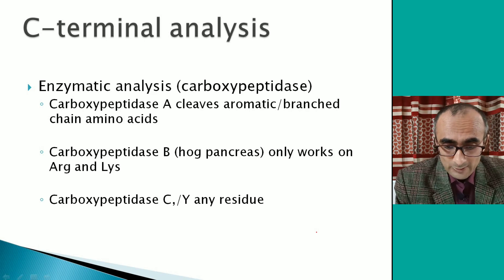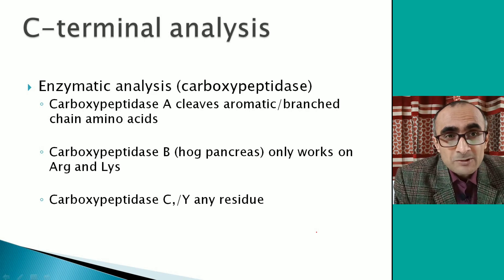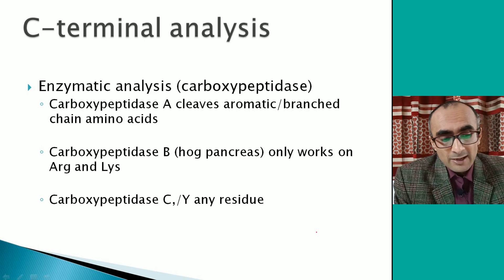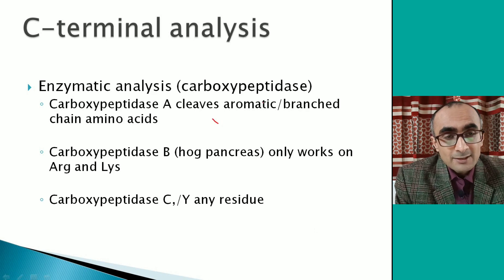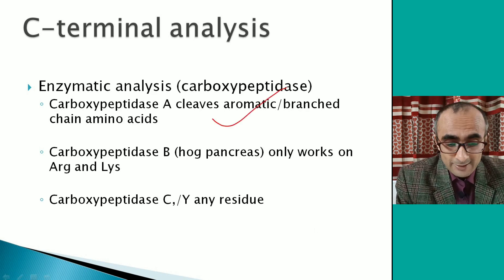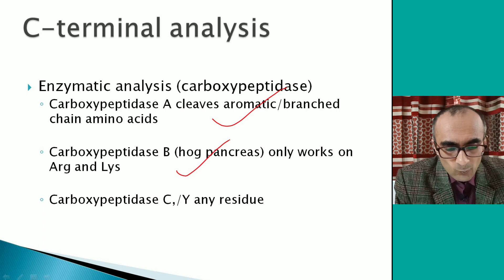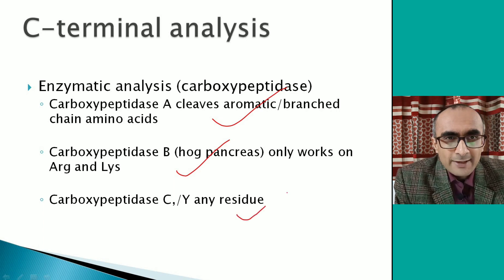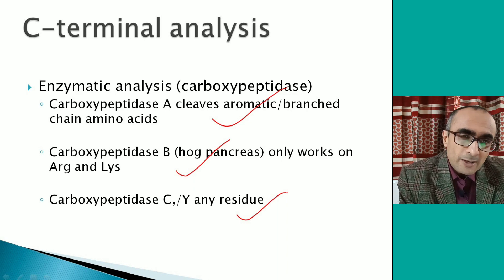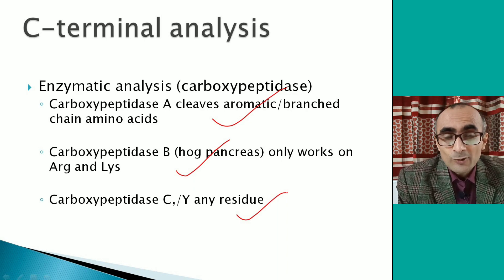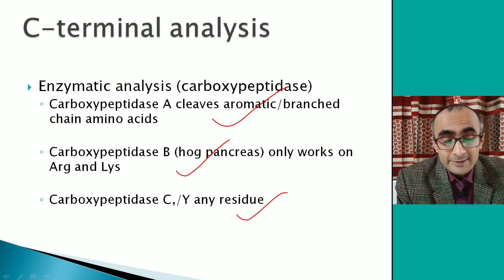Carboxypeptidase A cleaves aromatic and branched-chain amino acids from the C-terminal side of a peptide or protein. Carboxypeptidase B works on lysine and arginine at the C-terminal. Carboxypeptidase C (or Y) cleaves any amino acid from the C-terminal side. You can use carboxypeptidases, observe which amino acid is liberated, and thereby identify the C-terminal amino acid in a peptide or protein.